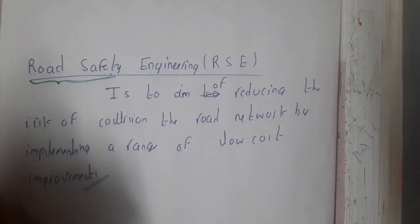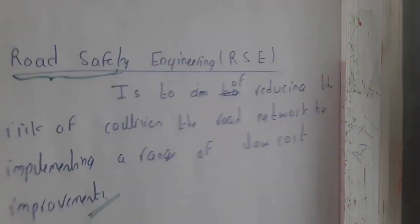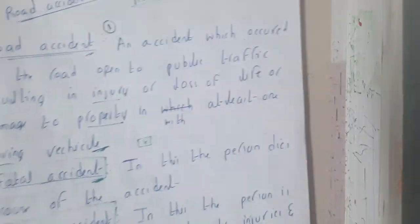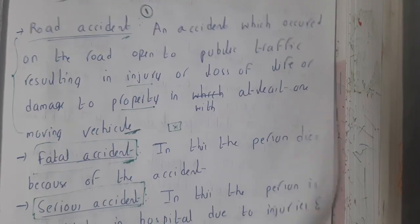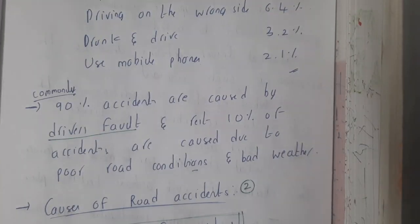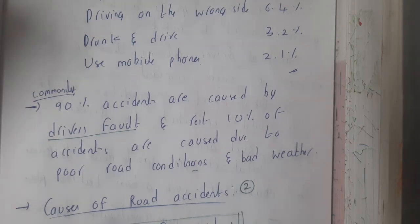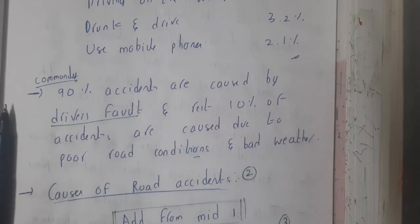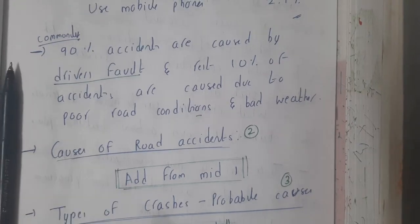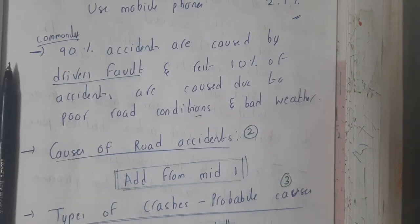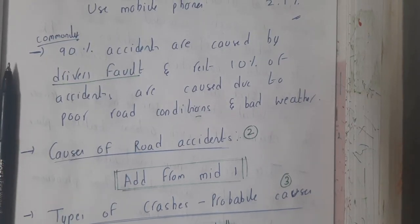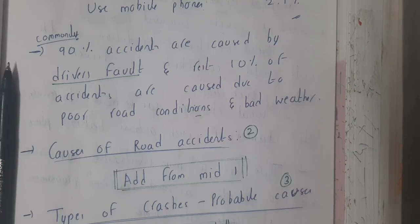So we have covered road accidents, different terminology, some facts, and the definition of road safety engineering. In the next lecture we will be discussing the major causes of road accidents — around two to three causes. Let us meet in the next lecture. Thanks for watching.